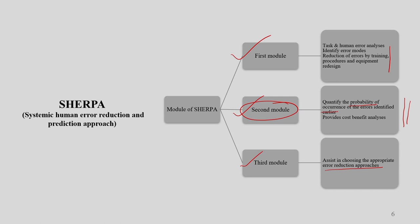The third module assists in choosing appropriate error reduction approaches. From the second module, we quantify what kinds of errors happen due to human factors in earlier cases. Then in the third module, we predict how we can reduce that particular error. First we identify the task, then we quantify where problems can happen, and from that data we understand what kind of reduction is possible. This is a very systemic analysis.